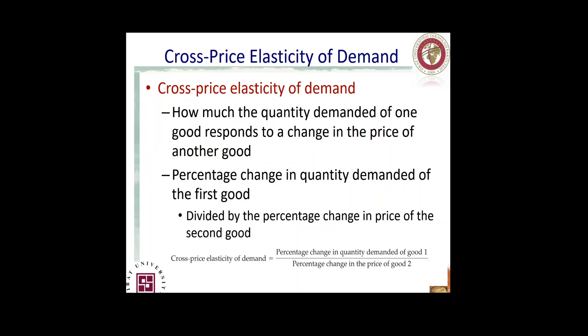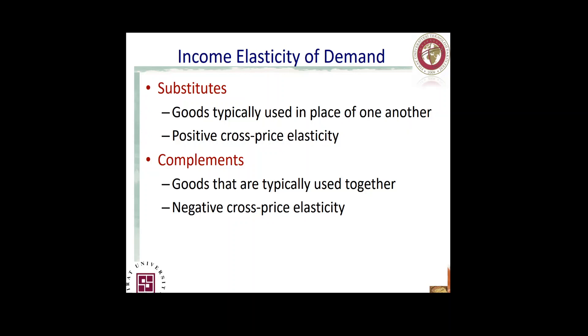From cross-price elasticity we can measure the behavior of demand for one product based on an increment or decrement in the price of another product or service. If you recall from the last chapter, we spoke about two types of goods with unique relationships: substitutes and complements.